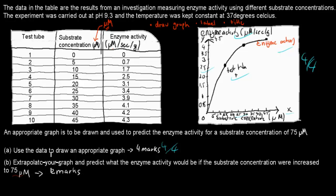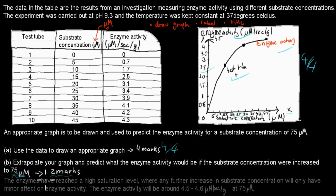Question B says: Extrapolate your graph and predict what the enzyme activity would be if the substrate concentration were increased to 75 micromolar. That's worth 2 marks. In this case, you have to make an educated guess. Look at the graph and data, and use your knowledge to guess what the enzyme activity would be if we increased it from 45 to 75 micromolar. What I wrote is: The enzymes have reached a high saturation level where any further increase in substrate concentration will only have a minor effect on enzyme activity.